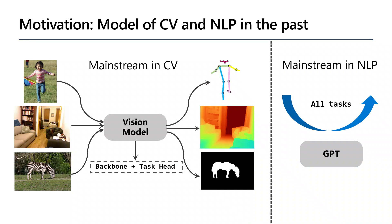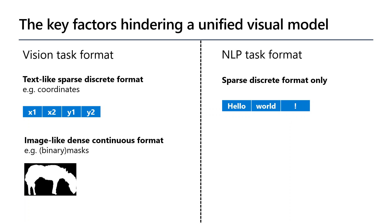However, all inputs and outputs in NLP can be represented as words. We divide the annotation format of visual tasks into two major categories: sparse discrete format and dense continuous format. Sparse format annotations, for example coordinates, are already discrete as text tokens. We mainly focus on how to convert the dense continuous format — for example, binary masks and depth maps — into tokens effectively.